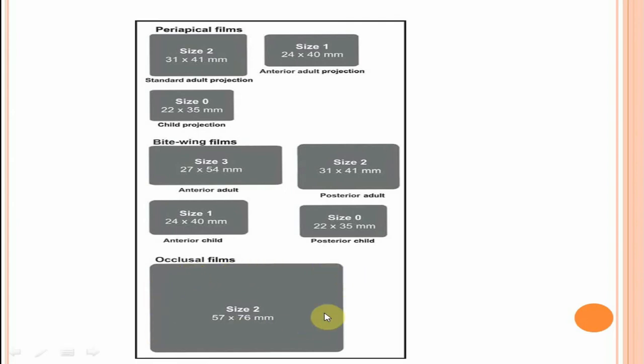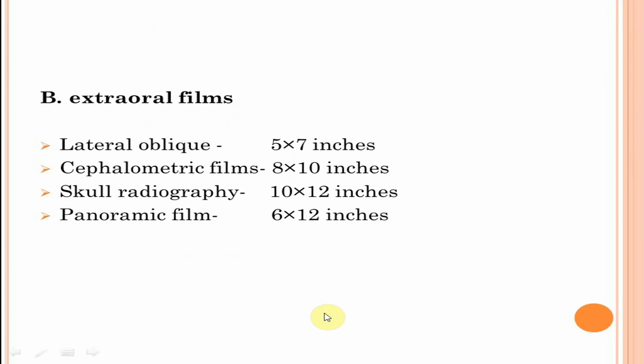Extraoral films are placed outside the mouth during x-ray exposure and used to examine larger areas of the skull and jaws. They are of different types: lateral oblique 5 x 7 inches, cephalometric films 8 x 10 inches, skull radiography 10 x 12 inches, and panoramic film 6 x 12 inches.